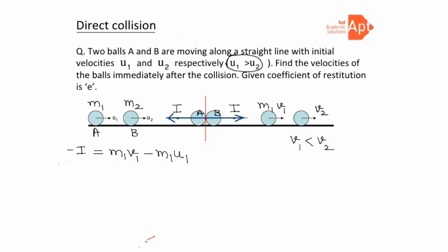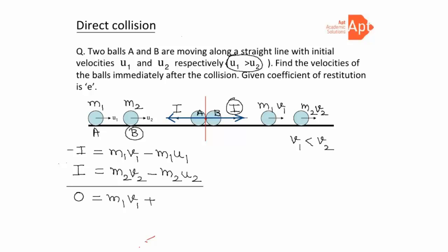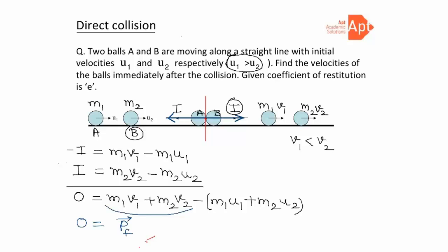The impulse-momentum theorem for ball B: the impulse acts along the positive x-axis, so it is +I, equal to m2·v2 minus m2·u2. Adding these two equations together, we get 0 = m1·v1 + m2·v2 − m1·u1 − m2·u2. This shows that the total momentum of the system is conserved.